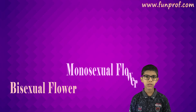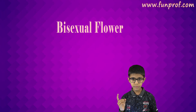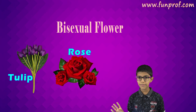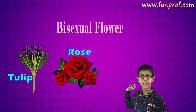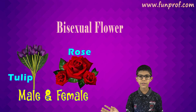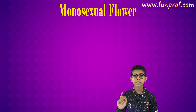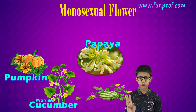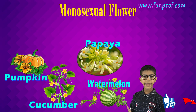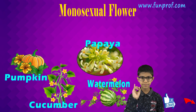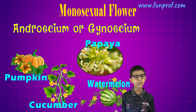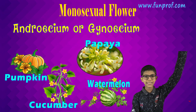Let's take some examples. Tulip and rose are bisexual flowers — they contain both the male and the female gametes. Monosexual flowers include pumpkin, cucumber, papaya, watermelon, etc. — they contain only one: either the androsium or the gynosium. Thank you, bye, have a nice day!